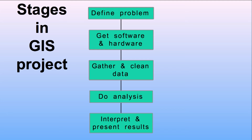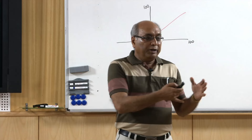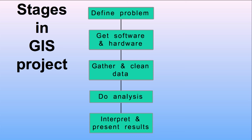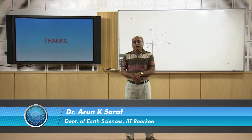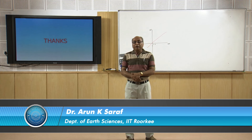There are different stages in a GIS project: first, define the problem; then get appropriate software and hardware — there are hundreds of GIS softwares, from free public-domain downloads to very expensive commercial software; then gather and clean data, which must be very reliable for good decisions; perform analysis including modeling if required; and finally interpret and present the results in the form of maps, tables, and reports. This brings us to the end of this introductory lecture. In the next lecture we will see the different components of GIS in detail.